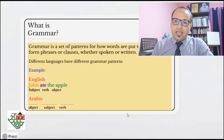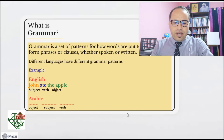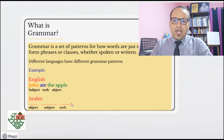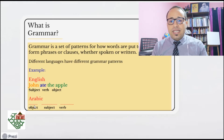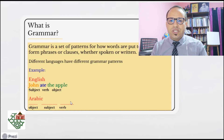But this is not the case in Arabic. In Arabic, we start with the verb, then the subject, then the object. So as you see, the sentence pattern and structure is very different from English to Arabic. The same applies if we compare these two languages to other languages. I've heard, for example, that in Turkish and Japanese they start with the object first — instead of saying 'John ate the apple,' they say 'the apple, John ate.' So we need to be aware of these differences in the grammatical and syntactic patterns of different languages.